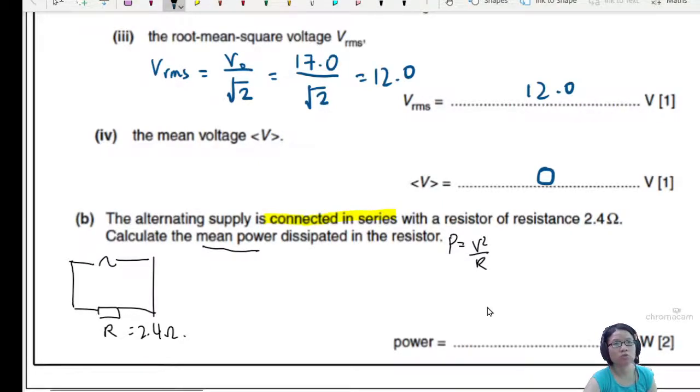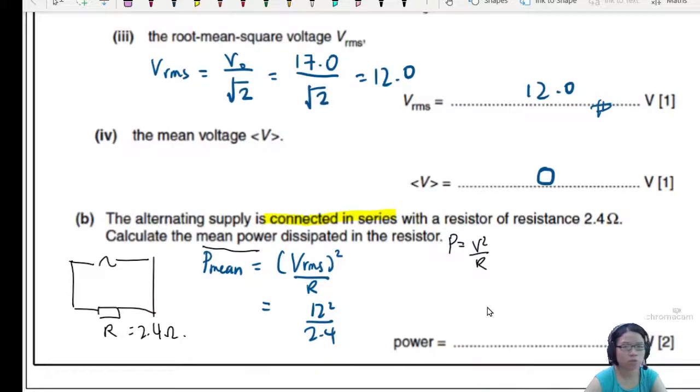So I will use the equation of P is equal to, because we want the mean power, mean, I will take the RMS square divided by R. So what is my RMS? My RMS is 12. Okay. Calculated here already 12. So 12 square over 2.4. And that will give me the answer of 60 watt.